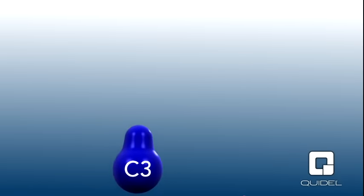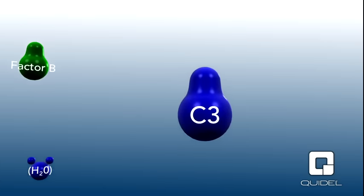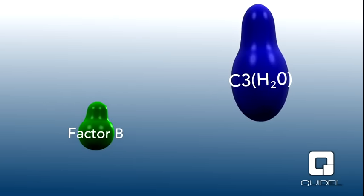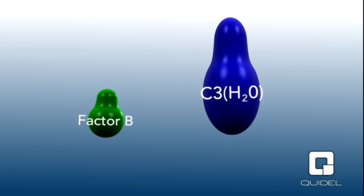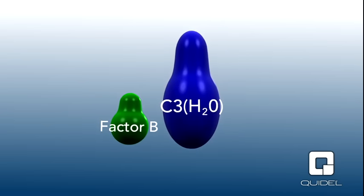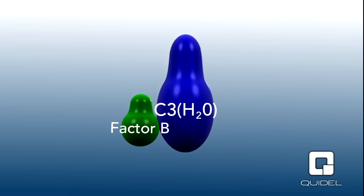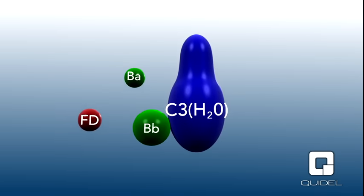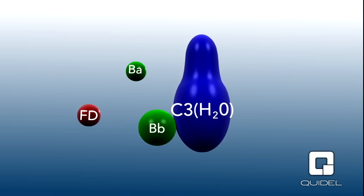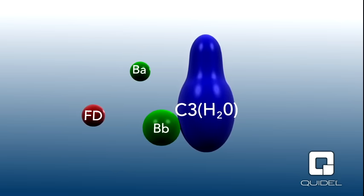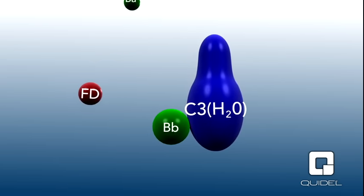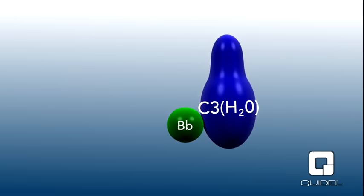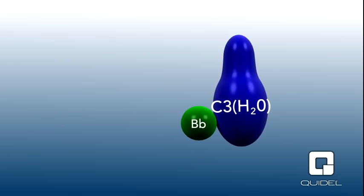The alternative pathway of complement is activated by LPS and other lipopolysaccharides found on the surface of invading pathogens. The alternative pathway is always active at a very low level due to the spontaneous hydrolysis of an internal thioester bond in C3. Hydrolyzed C3, called C3 water, has a binding site for Factor B, another protein in the alternative pathway. Factor B binds to C3 water and becomes a substrate for cleavage by Factor D. Factor D cleaves Factor B into two fragments, Ba and Bb. The enzymatically active Bb fragment remains associated with C3 water, and this bimolecular complex is the alternative pathway C3 initiation convertase.